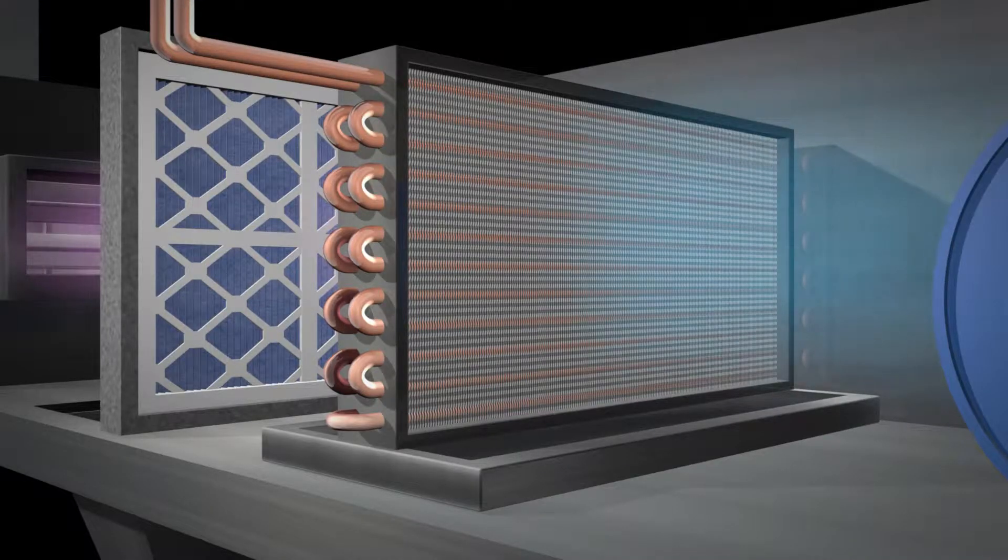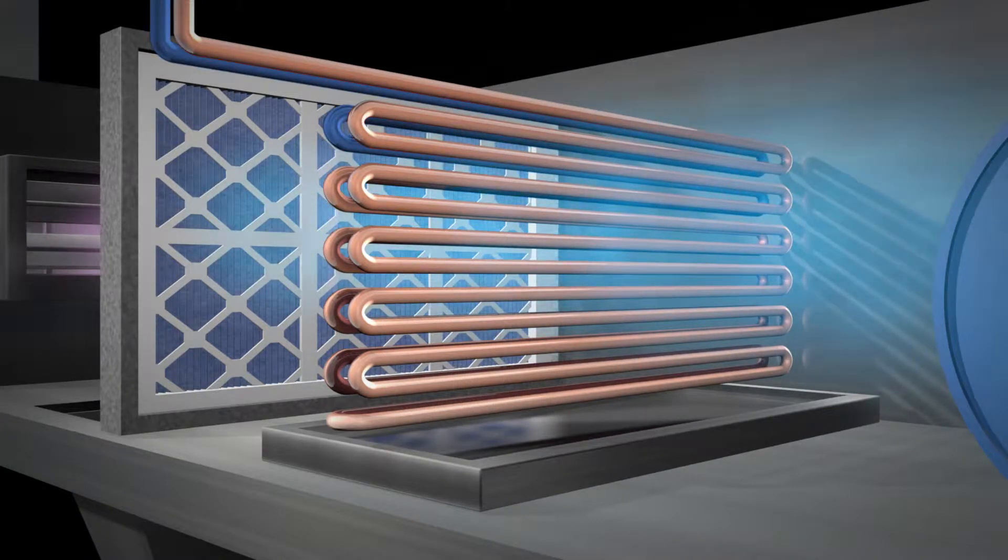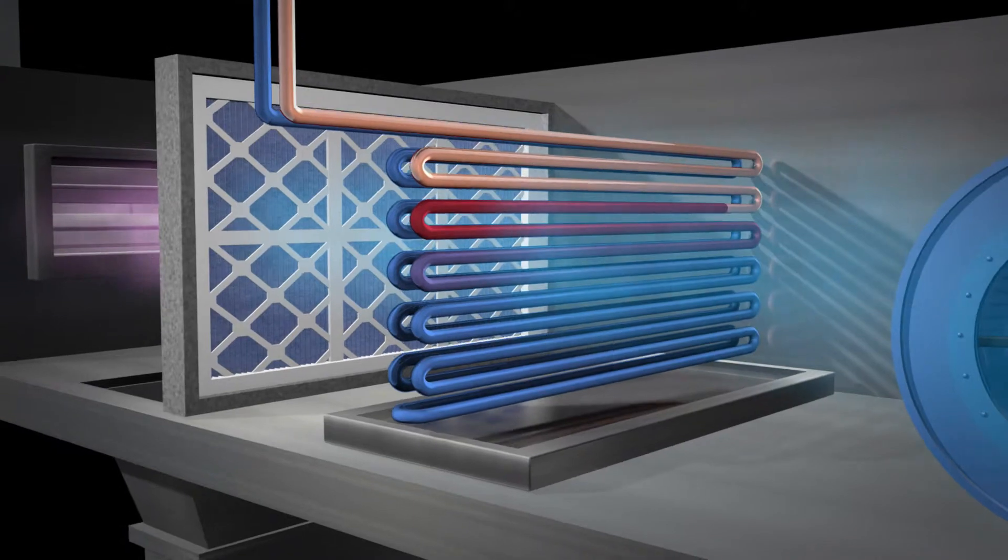The heat from the building's air is absorbed through the coil fins by a cold liquid, typically chilled water, that is being pumped through the coil. The heat is then transported in the water back to the chiller.